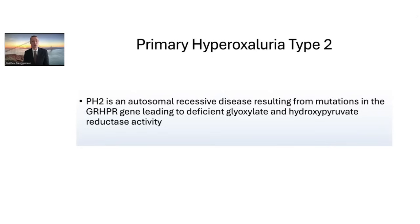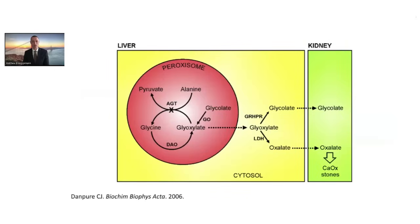Primary hyperoxaluria type 2 is also an autosomal recessive disease, but results from mutations in the GRHPR gene, leading to deficient glyoxalate and hydroxypyruvate reductase activity. In the cytosol of the hepatocyte, this enzyme metabolizes glyoxalate into glycolate, a benign compound that does not crystallize to form stones. In patients with PH2, decreased activity results in preferential conversion of glyoxalate into oxalate via lactate dehydrogenase, ultimately leading to renal adverse events.